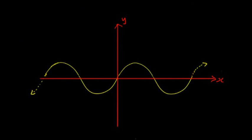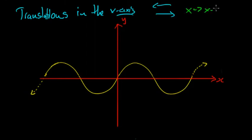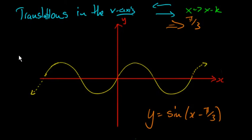Now let's look at translations in the x-axis — instead of moving the graph up and down, we're going to move it across to the right or to the left. To achieve this, we replace x with x minus k. So if we let k equal π/3, we get the equation y equals sine of (x minus π/3). k is often not just an integer; it can often be in terms of pi, which makes the calculations easier by hand. Having x minus π/3 means we've shifted it to the right by π/3 units, so every part of the graph shifts across by π/3.